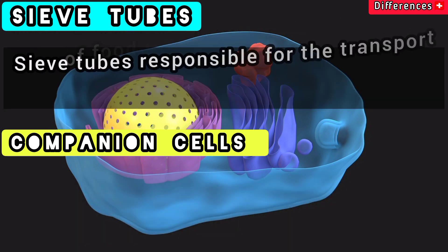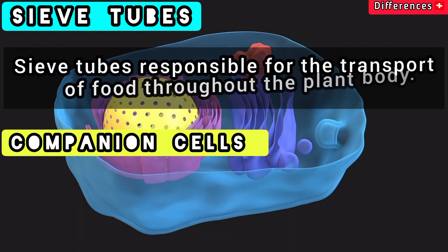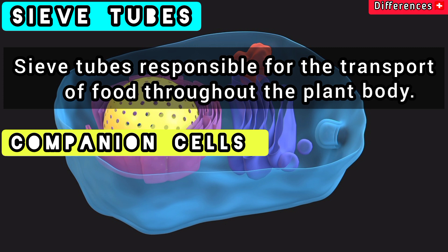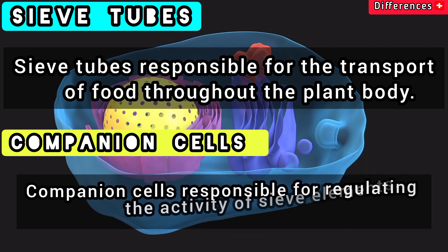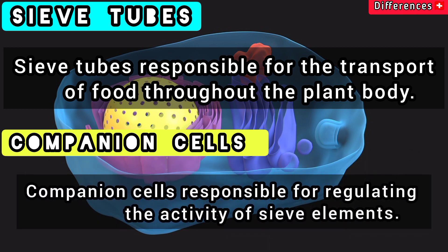Sieve tubes are responsible for the transport of food throughout the plant body, while companion cells are responsible for regulating the activity of sieve elements.